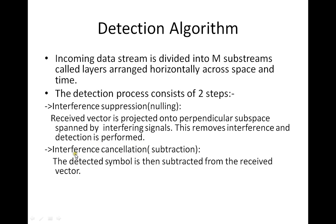The second step is interference cancellation, which removes the detected symbol from the received vector. These two steps — interference suppression and interference cancellation — form the basic underlying algorithm of VBLAST, and we will go about them in detail as to how they are performed mathematically.